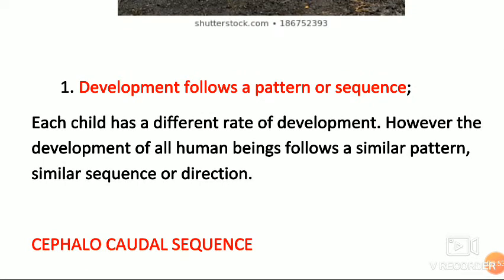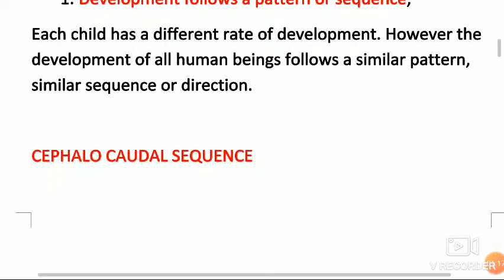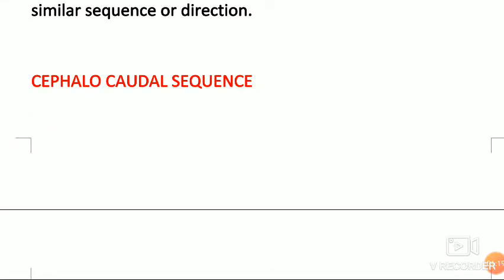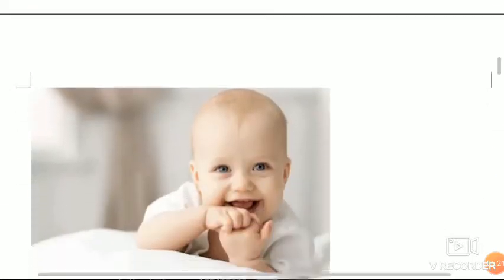Principles of development is important. Our development always follows a pattern or sequence — this is the first and most important principle. Each child has a different rate of development; however, the development of all human beings follows a similar pattern, sequence, or direction. There are two main directions of development. The first one is the cephalocaudal sequence.